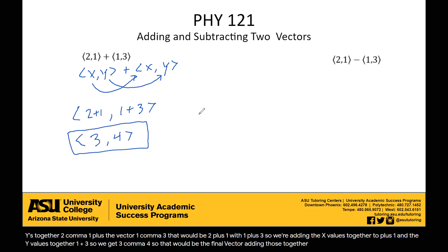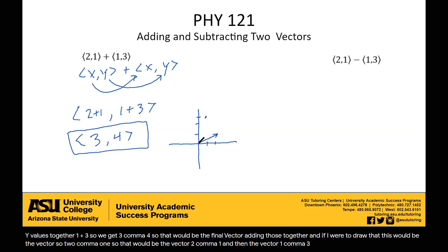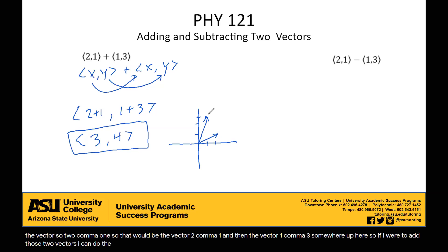If I were to draw that, this would be the vector (2, 1), and the vector (1, 3) would be somewhere up here. If I were to add those two vectors, I can do the parallelogram rule — I draw my parallelogram, and that would be the addition of those two vectors.